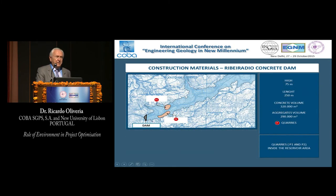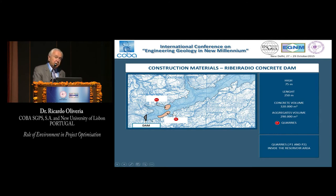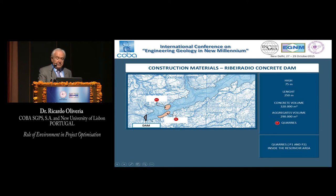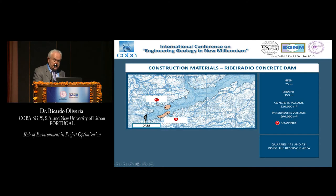This is another example — a concrete dam, 70 meters high and 250 meters long, requiring a concrete volume of 320,000 cubic meters. The aggregates required about 300,000 cubic meters. We studied the area extensively and were able to find two quarry sites from which the material could be excavated. This proved to be the appropriate solution for this case.